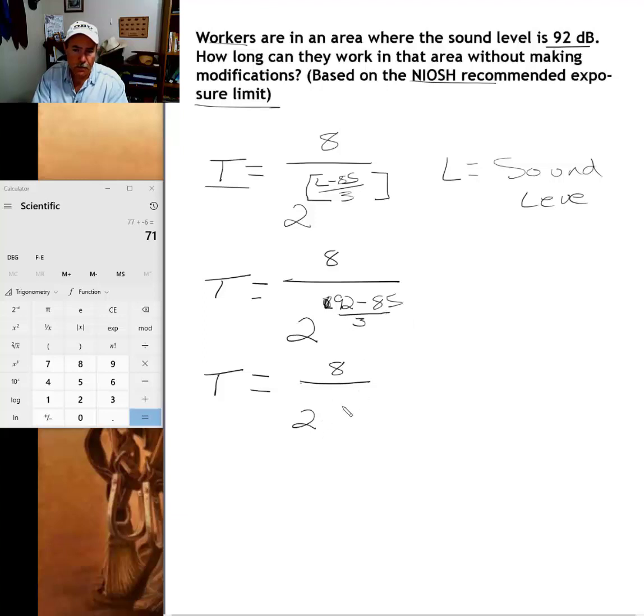92 minus 85 is 7, so at this point, this iteration, we have 8 divided by 2 to the 7 divided by 3 power, or 8 divided by 2 to the power of 7 divided by 3.